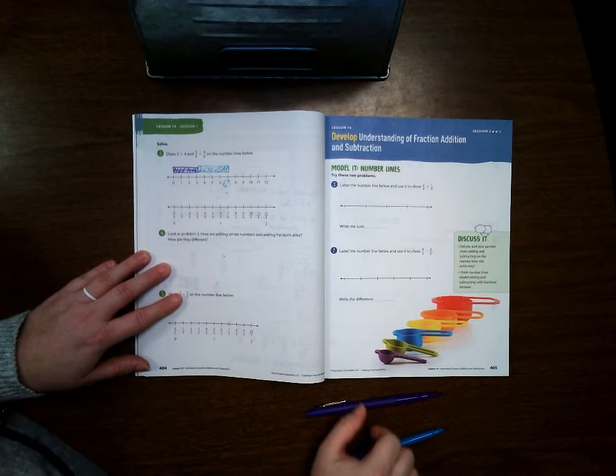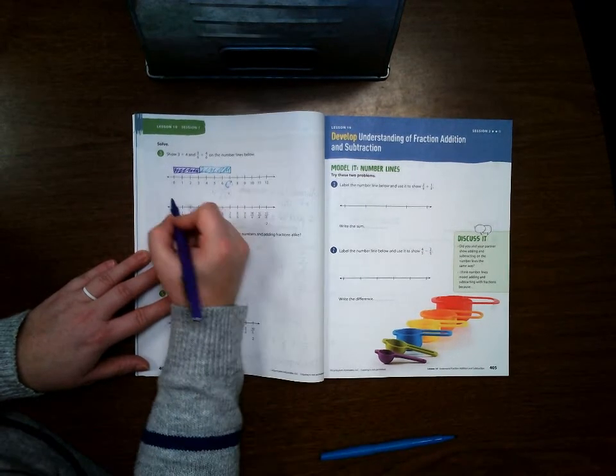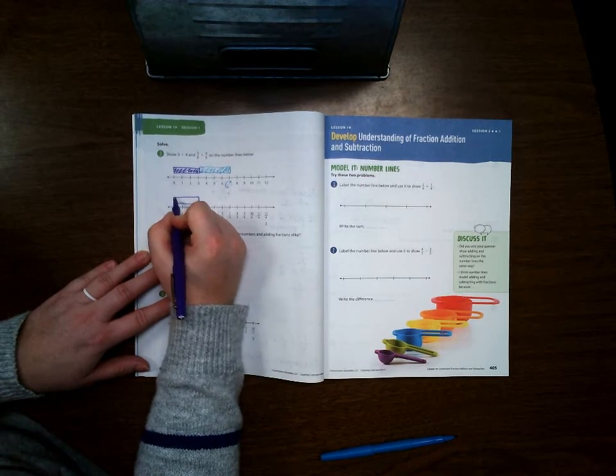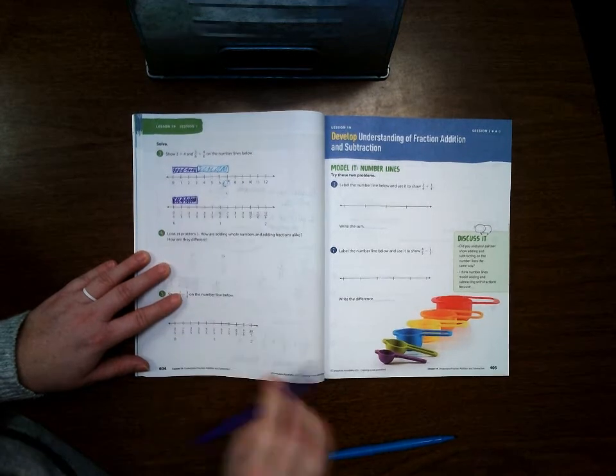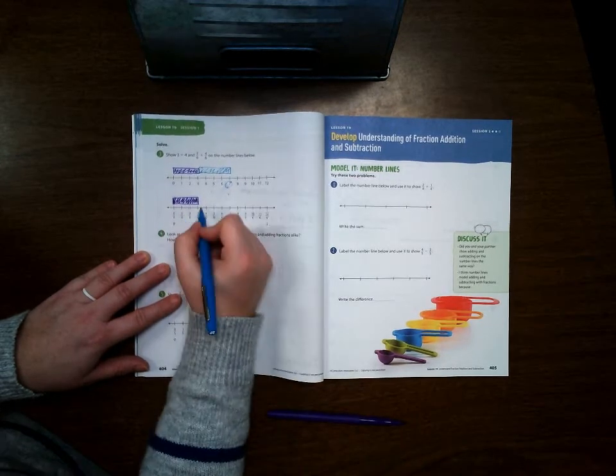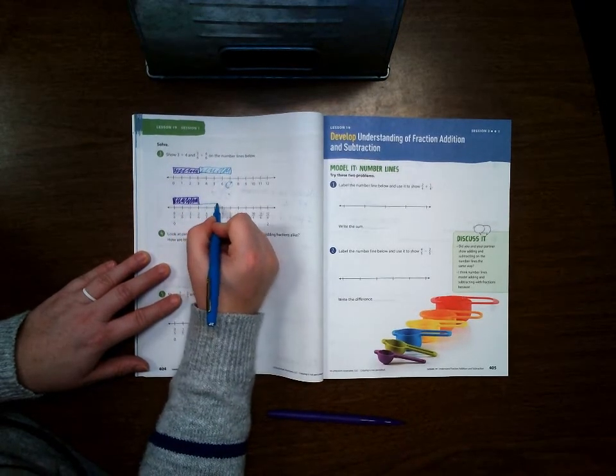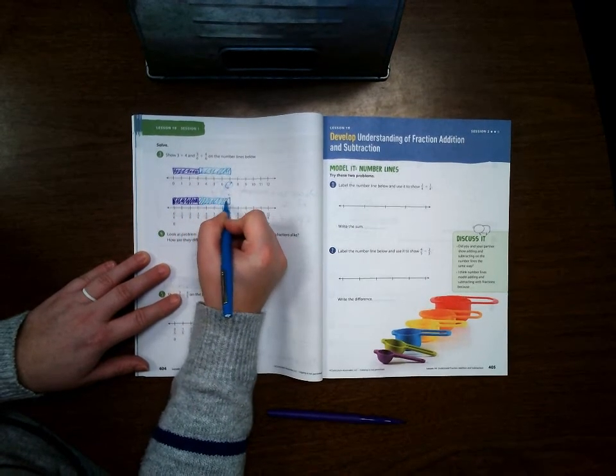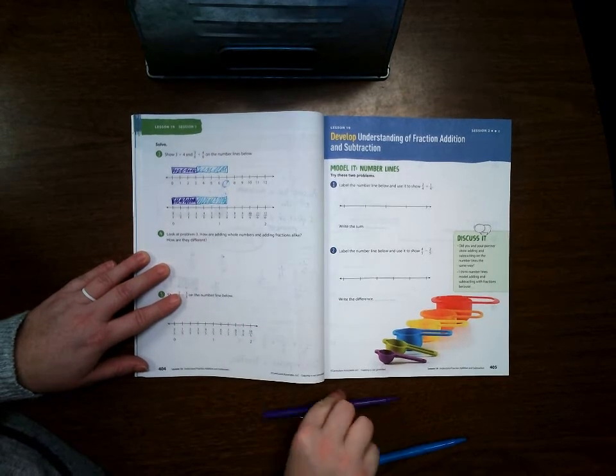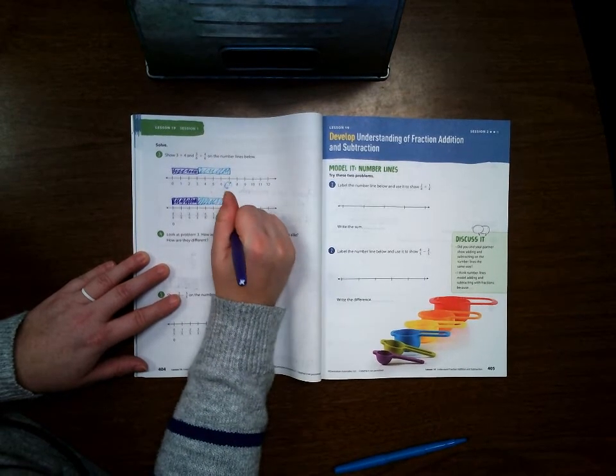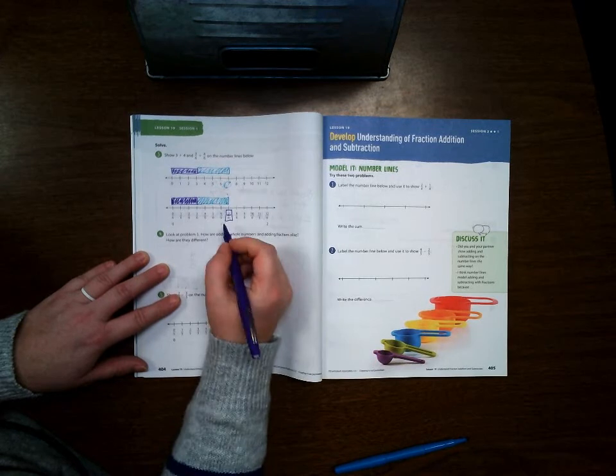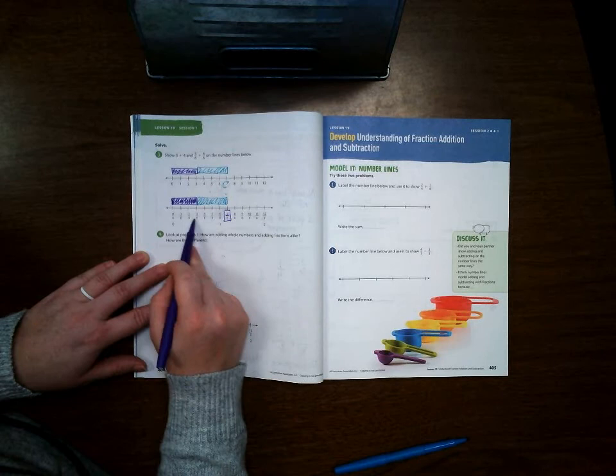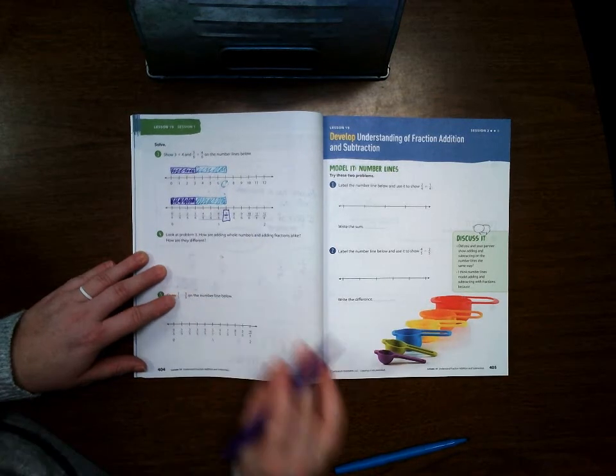And then down here we're going to do 3/6, and then we're going to add 4/6. So we stopped at 7/6. As you can see, the top number is the same as the number that we got up here, and then our bottom number, the 6, stays the same throughout this entire problem.